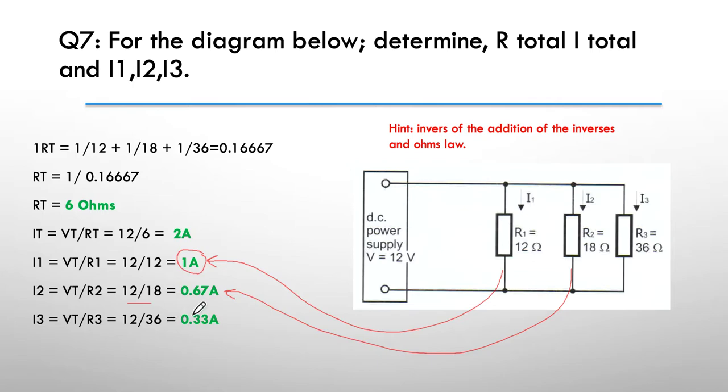And then finally, do the same calc but this time with 36 ohms, and we end up with 0.33. So R total at 6 ohms, current at 2 amps, and a total current in each of the branches of 1 amp, 0.67, and 0.33. And if we add those three together, they add up to 2 amps, and that's a nice way to verify that we've got the right calc happening here.